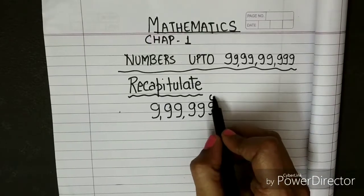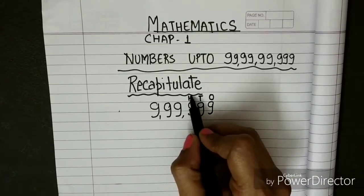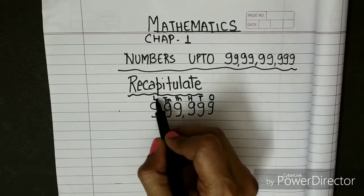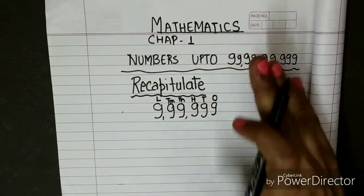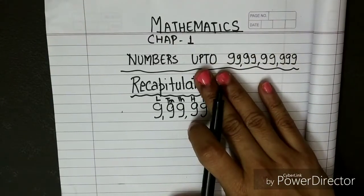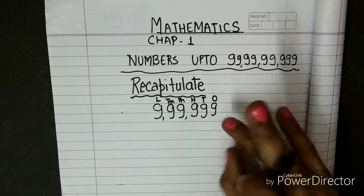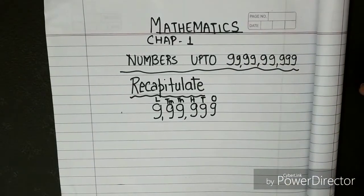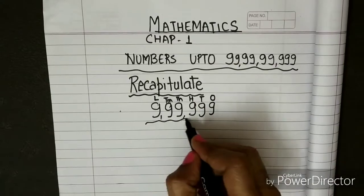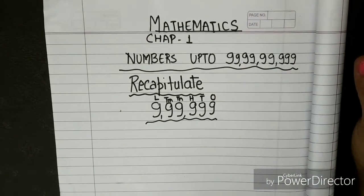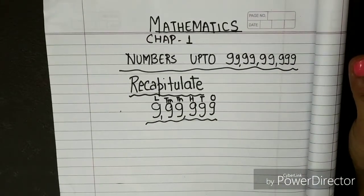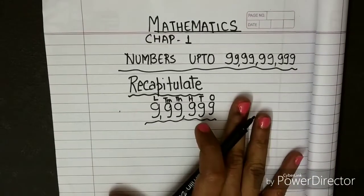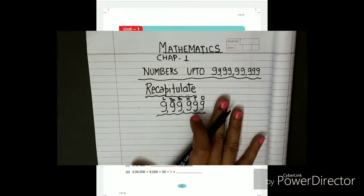We covered ones, tens, hundreds, thousands, ten thousands, and lakh. In this class and upcoming classes, we are going to do 10 lakh, 1 crore, 10 crore, and also the international place value system. But today we are only doing a revisionary exercise. I will post the picture of the recapitulation exercise that you are going to do.